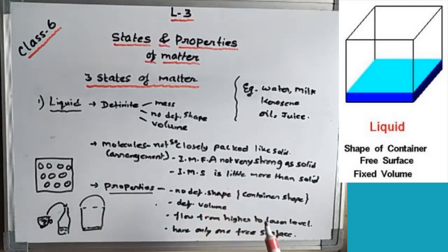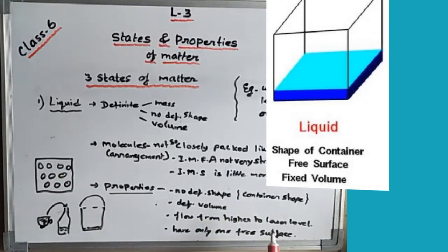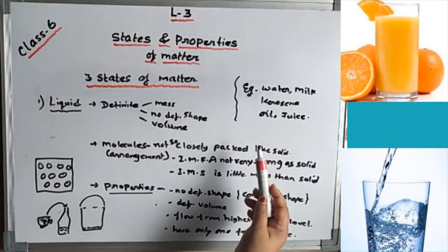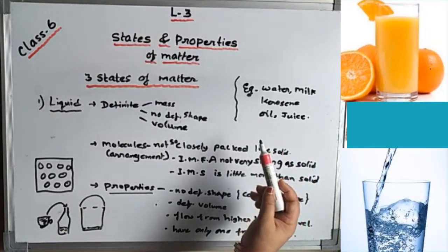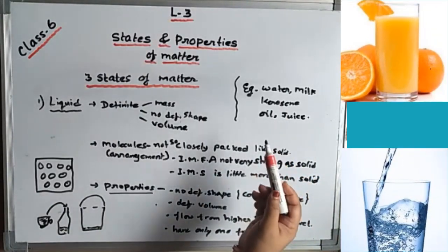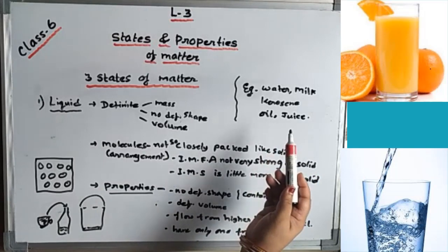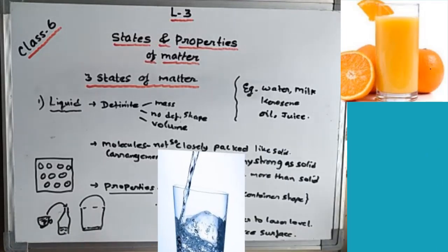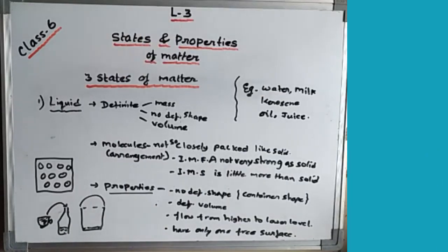We can take any example of liquid. Water is a very good example. Other examples include milk, kerosene, any type of oil, any type of fruit juices, and cold drinks. These are very good examples of substances found in the liquid state.